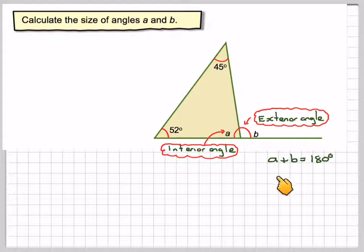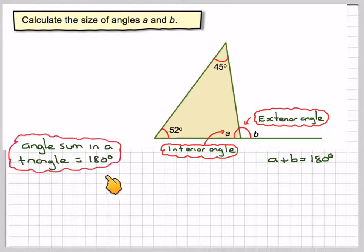We also know that A plus B is equal to 180 because they're on a straight line. And therefore, the angle sum in a triangle will be equal to 180.